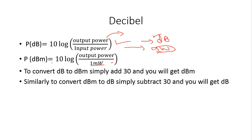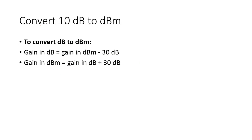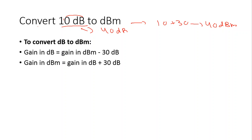When we talk about dBm, the reference power is taken as one milliwatt — that is why we have the 'm' which stands for milli. So dBm is referenced to the absolute value of one milliwatt. To convert dB to dBm, simply add 30. To convert dBm to dB, simply subtract 30. For example, 10 dB converted to dBm: add 30 and you get 40 dBm. So 10 dB equals 40 dBm.